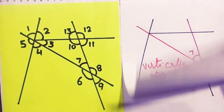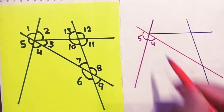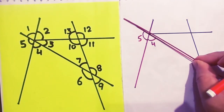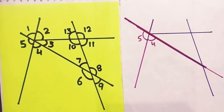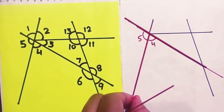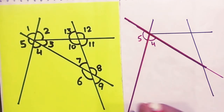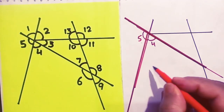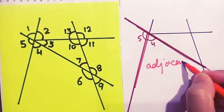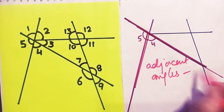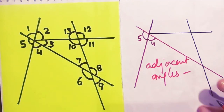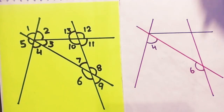The next one asks about angles 5 and 4. These are the two angles made on the opposite side of a common arm. This is your common arm. Therefore, they are known as adjacent angles.